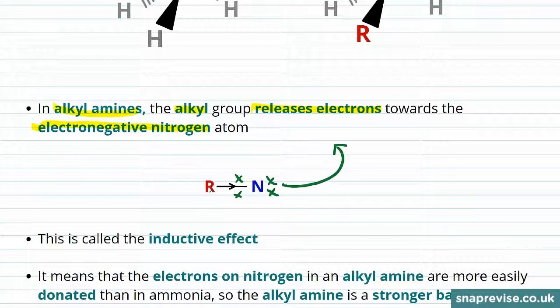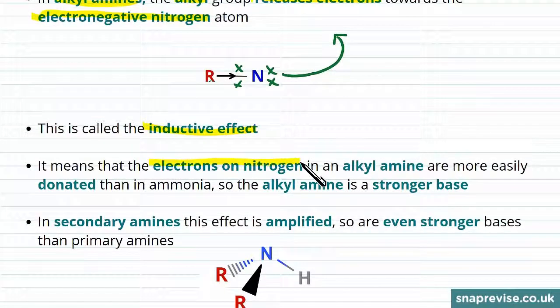We call this effect, where the alkyl groups are pushing electrons towards the nitrogen, the inductive effect. It means that the electrons on the nitrogen in an alkyl amine are more easily donated than in ammonia, because we don't get this effect with hydrogen. So the alkyl amine is a stronger base, because it will more readily donate its electrons.